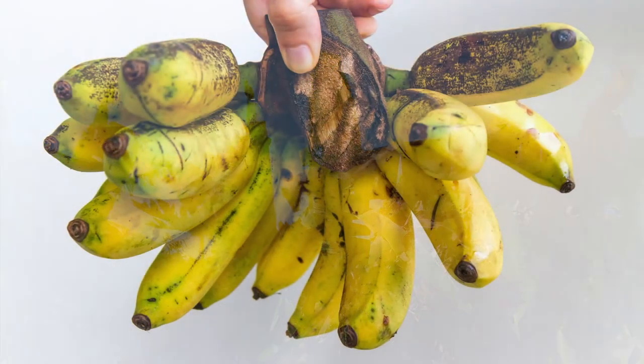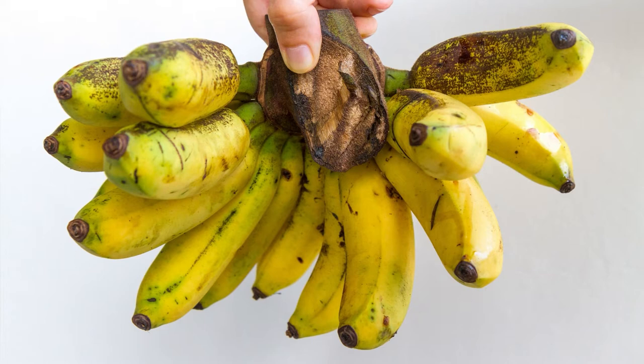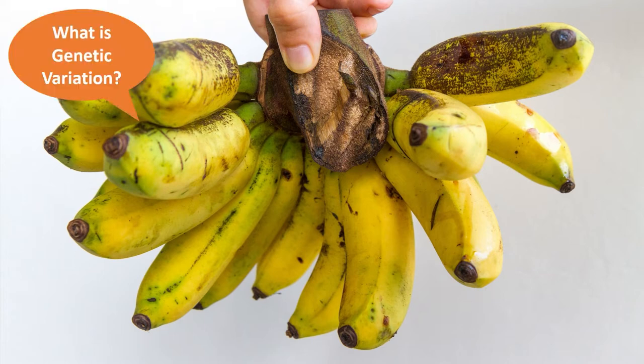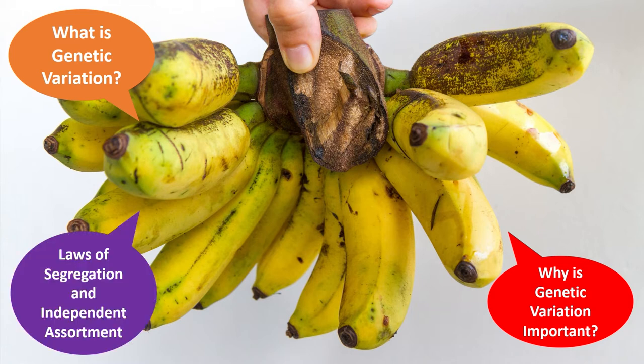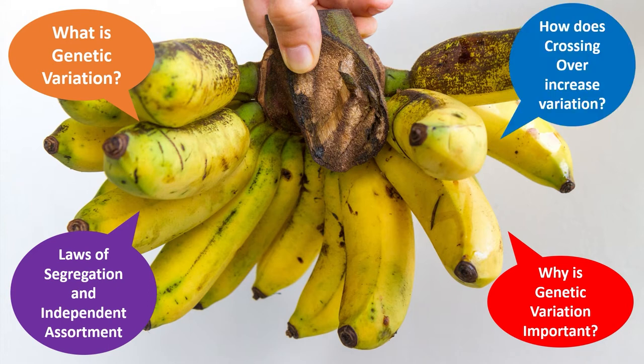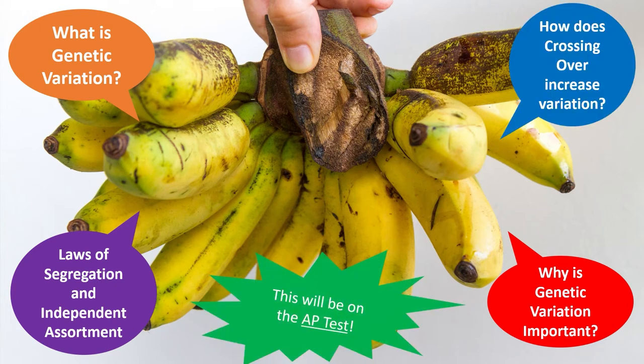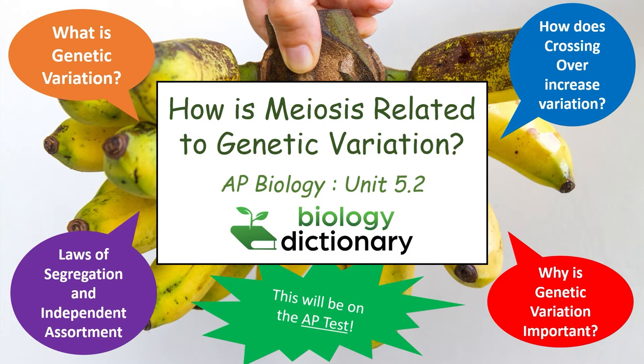Now you can only get Cavendish bananas at the grocery store. If banana farmers had had a little foresight, they would have put Gros Michel bananas through the process of meiosis on a regular basis. This may have preserved enough genetic diversity in the crop to protect it from the banana-eating fungus. Meiosis has several mechanisms that recombine genetic variants from different lines to create unique and resistant offspring. The AP test will definitely ask a question or two on how meiosis increases genetic diversity, so follow along as we dive into the process of meiosis and show exactly how it increases genetic variation in a population.